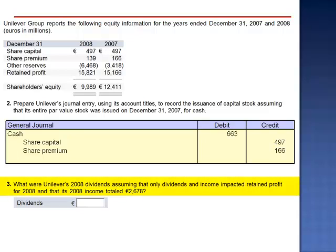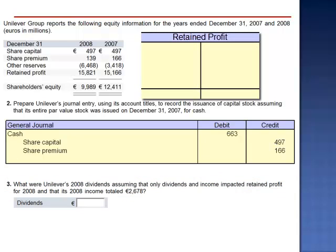What were Unilever's 2008 dividends, assuming that only dividends and income impacted retained profit for 2008 and that its 2008 income totaled 2,678? When we reconstruct the retained profit T-account, the beginning balance 15,166 plus net income 2,678 minus dividends equals retained profit. The ending retained profit balance is 15,821. Dividends then totaled 2,023.